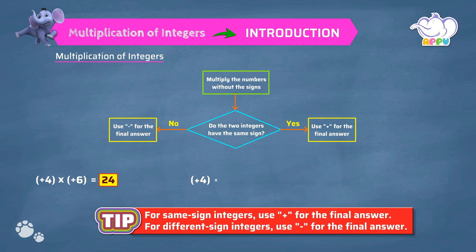Plus 4 into minus 6. To find the product of plus 4 and minus 6, we first find the product of 4 and 6, which equals 24. Since the two integers have different signs, we use minus for the final answer. So the answer is minus 24.